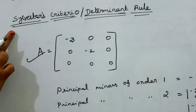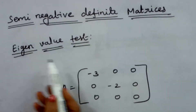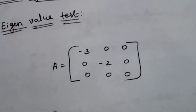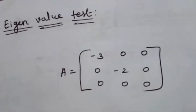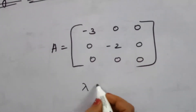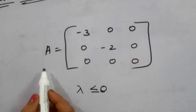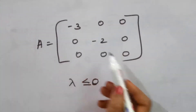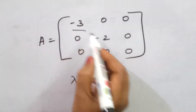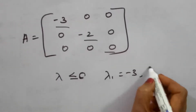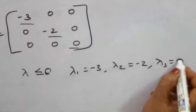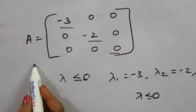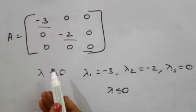The next method is the Eigenvalue Test. We calculate the eigenvalues of A. If all eigenvalues are less than or equal to 0, then A is a semi-negative definite matrix. Since the given matrix A is a diagonal matrix, the eigenvalues are read directly: lambda 1 = minus 3, lambda 2 = minus 2, lambda 3 = 0. All lambda values are less than or equal to 0, confirming A is semi-negative definite.